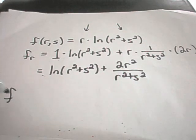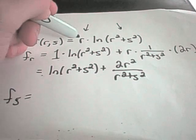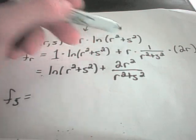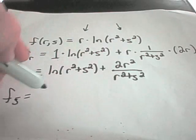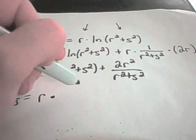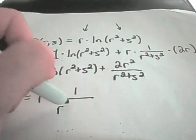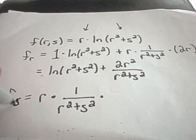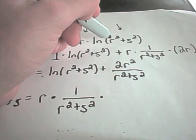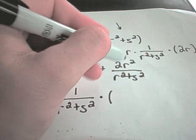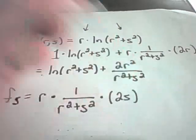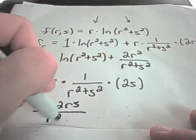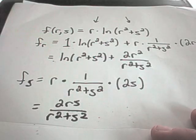If I take the derivative of this function with respect to s, now r is just like a constant. So I leave r alone and take the derivative of the ln part: I get 1 over r squared plus s squared. Using the chain rule, since I'm taking the derivative with respect to s, r is a constant so its derivative is 0, and the derivative of s squared is simply 2s. You could rewrite this as 2rs over r squared plus s squared, and that would be your final answer.